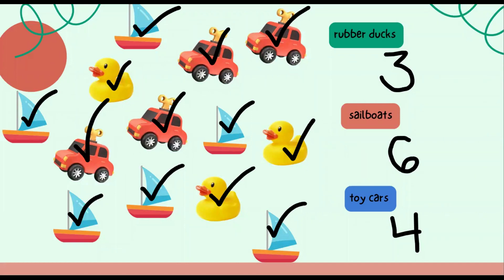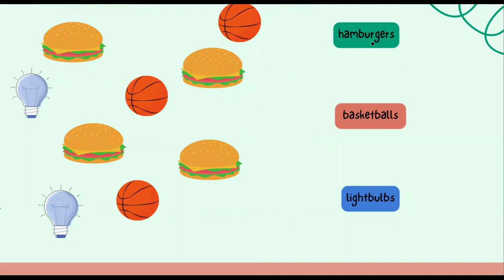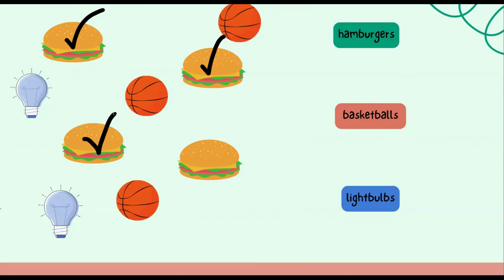Okay students, are you ready for the next set of objects? Let's see what we have next. Here we have hamburgers, basketballs, and light bulbs. How many of each do you see? First, let's count the hamburgers. Are you ready to count? Here we go: one, two, three, four. There are a total of four hamburgers.